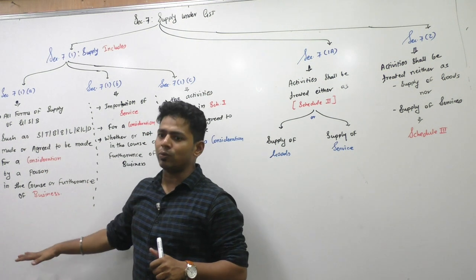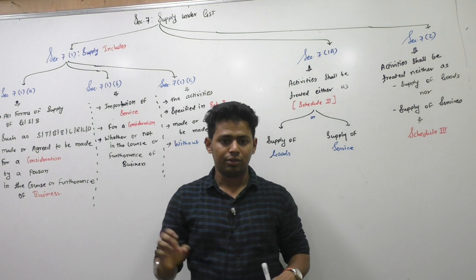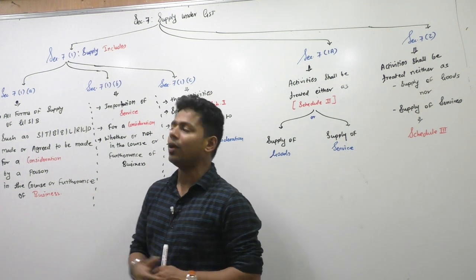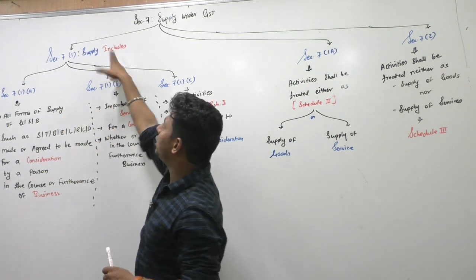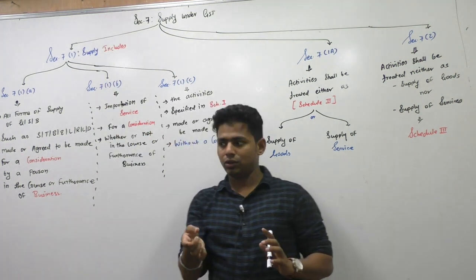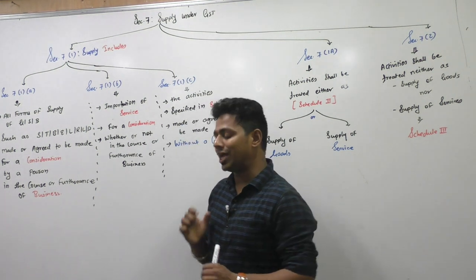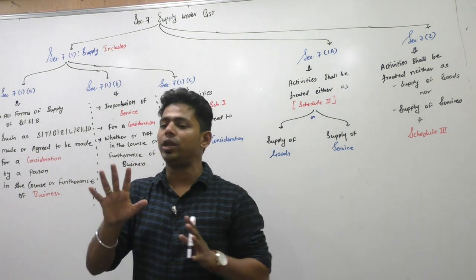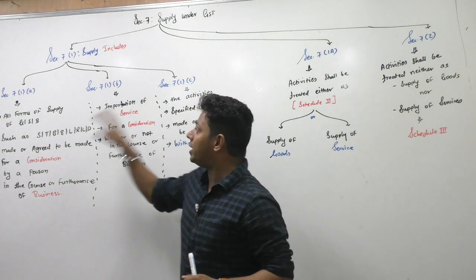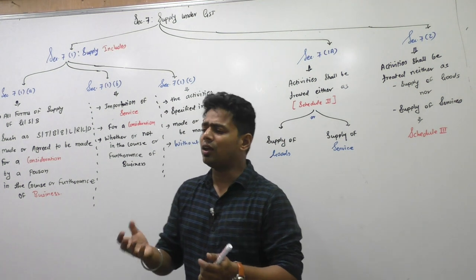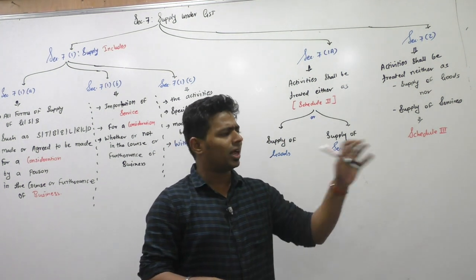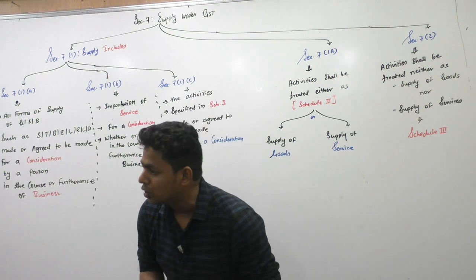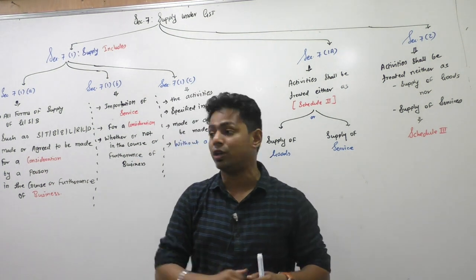I am going to teach you everything from 7(1)(A), but for the examination, only certain key words are important. Supply 'includes' — this word is very important. They did not say 'supply means.' There is a difference between 'supply means' and 'supply includes.' When I say 'supply means,' the government has given an exhaustive list — only this is supply. But here they are saying 'supply includes,' which is an inclusive definition, not an exhaustive definition.